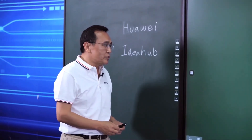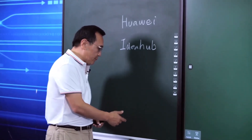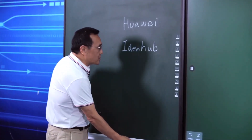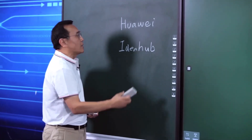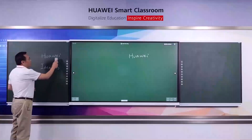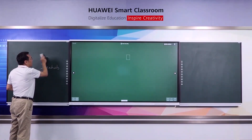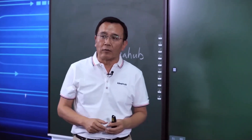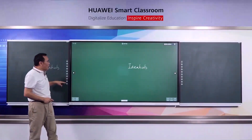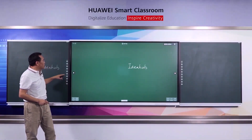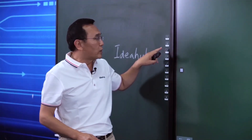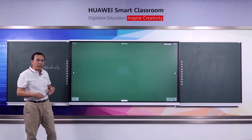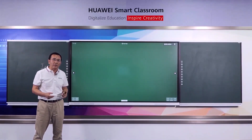You can use the brush to erase the contents on the blackboard, which also gives synchronization with Ideal Hub. Another option is you can use the clean button to clean the whole screen on the Ideal Hub.